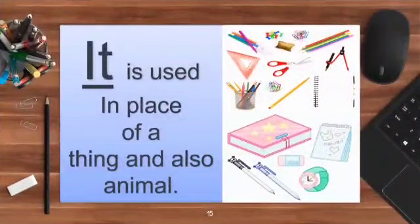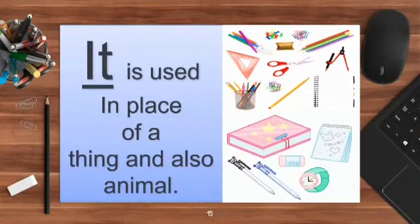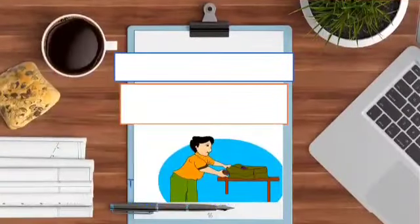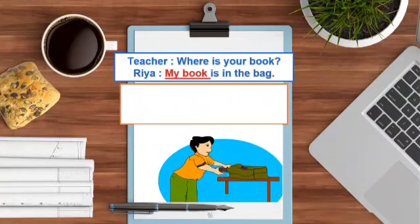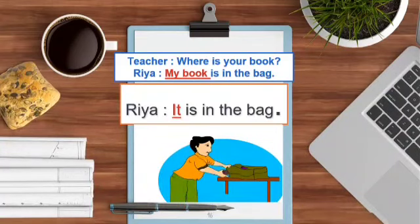Now, the next is it. Children, the pronoun it is used in place of a thing and also an animal. Let's see an example. Teacher said: Where is the book? Rhea said: My book is in the bag. So children, my book is a thing, and in place of a thing we always use it. Rhea said: It is in the bag.